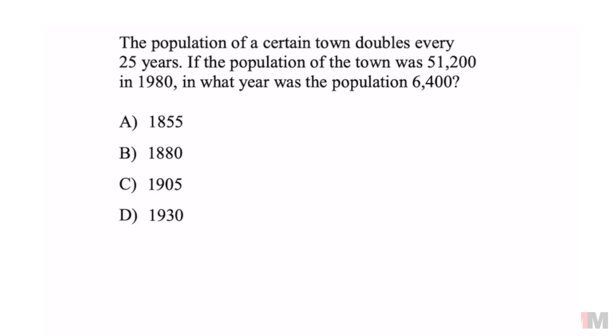The population of a certain town doubles every 25 years. If the population of the town was 51,200 in 1980, in what year was the population 6,400?